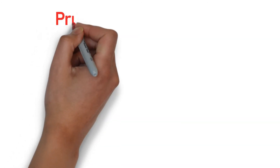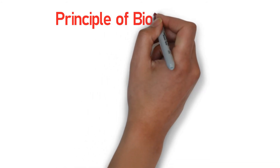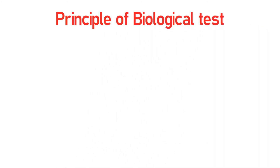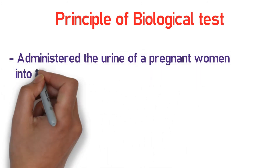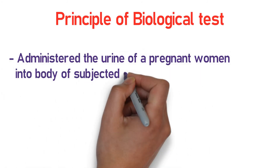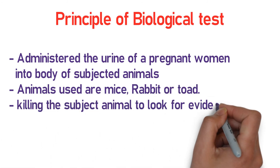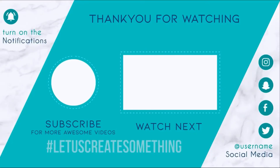The principle of the biological test works as follows: urine from a pregnant woman is administered into the body of a subject animal such as a toad, rabbit, or mouse. The subject animal is then killed to look for evidence of pregnancy-related changes.